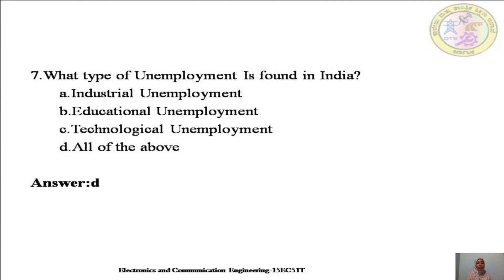The next question: What type of unemployment is found in India? Options are A. industrial unemployment, B. educational unemployment, C. technological unemployment, or D. all of the above. In our country we have all types of unemployment — industrial, educational, and technological unemployment — so the right answer is D, all of the above.